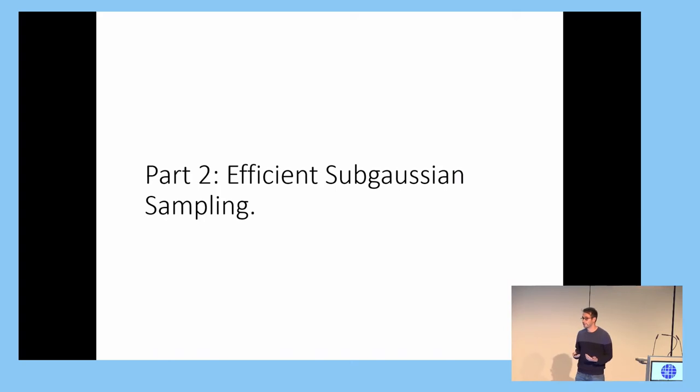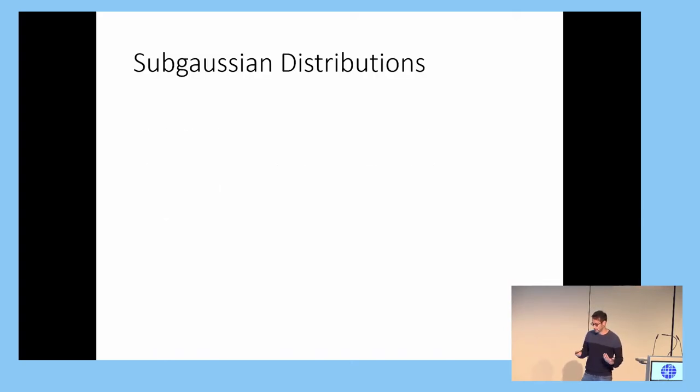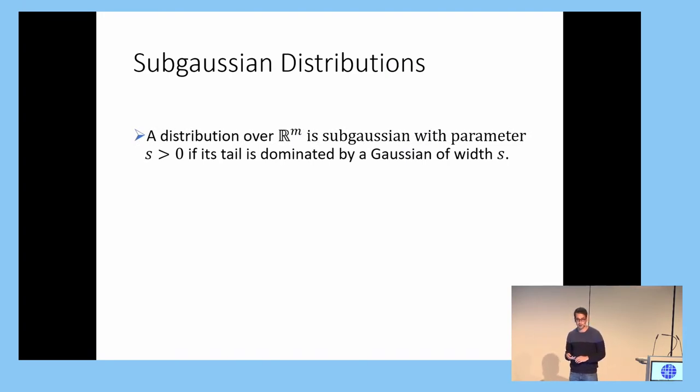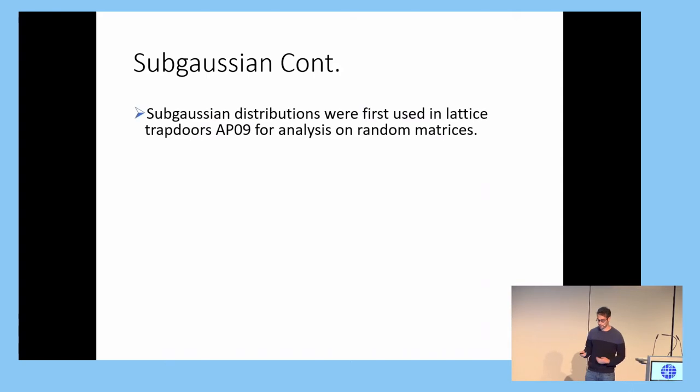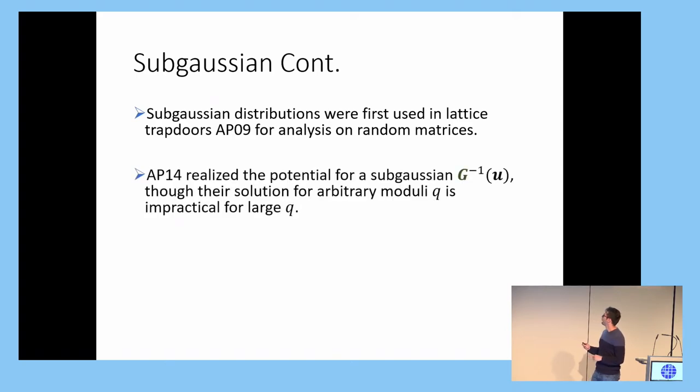So in order to make these randomized bit decompositions rigorous, we're going to use sub-Gaussian analysis. And, as one would expect, a sub-Gaussian distribution in RM is going to be any distribution whose tails are dominated by a Gaussian distribution with parameter S. So in mathematics, these are often used in study of random matrices. So if we were to sample a random matrix with independent sub-Gaussian rows, columns, or entries, we can get tight concentration bounds on the singular values of this matrix. So unsurprisingly, this is how these sub-Gaussian analyses first came about in lattice cryptography. In AP09, when they were optimizing the GPV trapdoors. But then, shortly thereafter, in AP14, they realized the potential for a sub-Gaussian bit decomposition while they were coming up with an optimization for the GSW-FHE scheme.